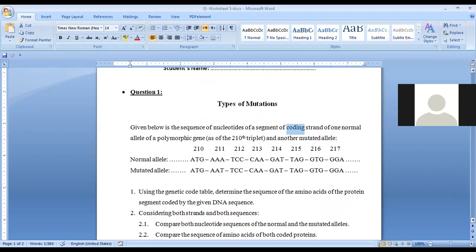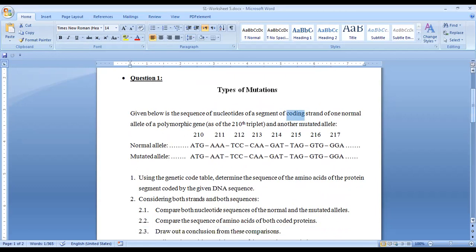So it's the same strand, the same sequence. Instead of T is replaced by U, and this is the sequence of the mRNA. We have a strand of one normal allele of a polymorphic gene as of the 210th triplet. They start from the 210th triplet, 210th codon, and another mutated allele. The normal allele sequence starts from the 210th: ATG, AAA, TCC, CAA, GAT, TAG, GTG, and GGA.